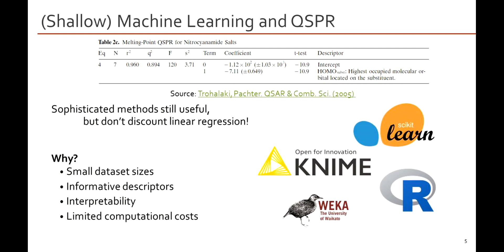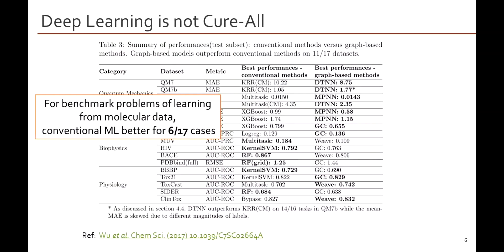Such a model would be exceedingly quick to compute as long as you had a good source for the HOMO of a new molecule — something you could use to scan billions of compounds to quickly predict melting temperatures. It's also worth noting that simple or shallow learning techniques are still very relevant. In a study from 2017, even on established benchmarking problems, conventional machine learning methods can still do much better than deep learning or graph-based neural network equivalents.